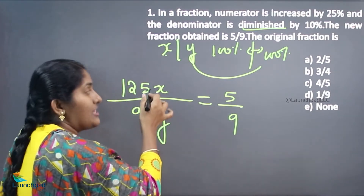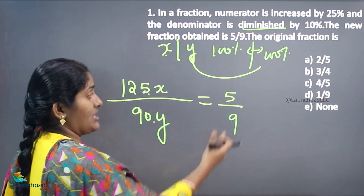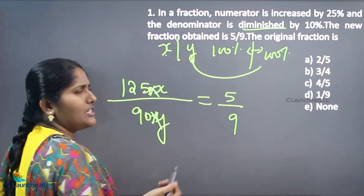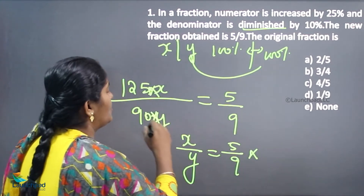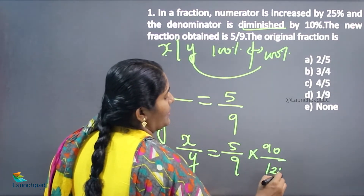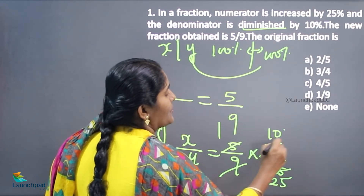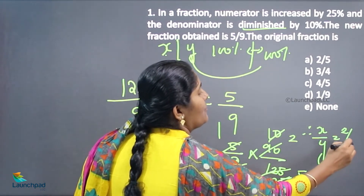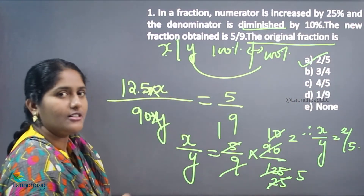These are the respective value changes in the numerator and denominator, giving us the new fraction 5 by 9. Cancelling the percentage signs, x by y equals 5/9 multiplied by 90/125, which simplifies to 2 by 5. Hence the original fraction is 2 by 5. Your answer is option A.